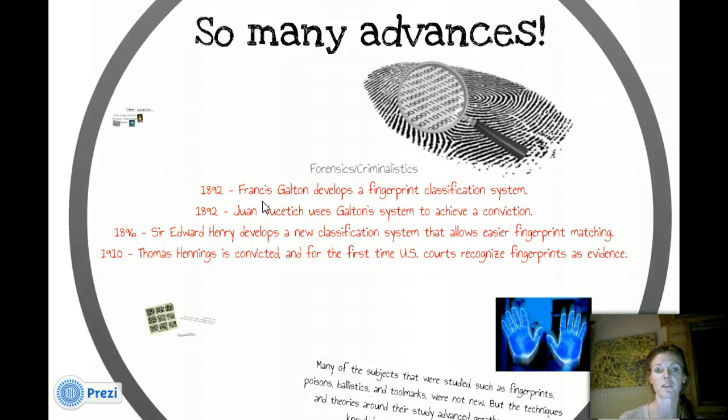So, when we talk about forensics slash criminalistics, here are some of the time frames in the late 1800s to the early 1900s. So, Francis Galton developed the fingerprint classification system. That's kind of a big deal, because fingerprints are left on everything, right? At a crime scene, at anything, believe it or not, you're leaving your fingerprints absolutely everywhere. Doesn't that make you excited? No. But to begin with, it was just a classification system of how to identify people. And then, that same year, Juan, I don't know how to pronounce his last name, whatever, uses Galton's system to achieve a conviction.